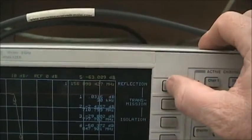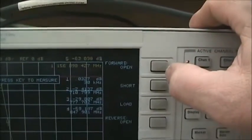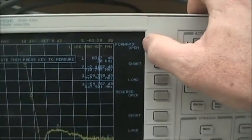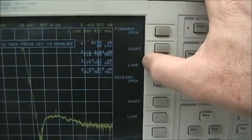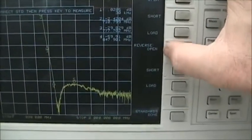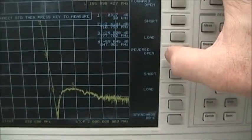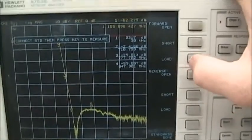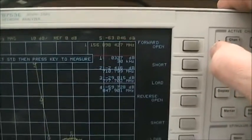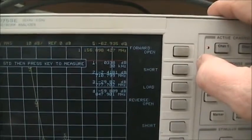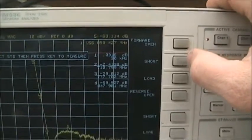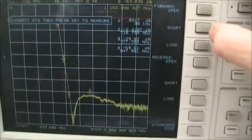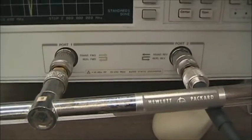I press reflection, and I see that I have open short load SOL for the forward port, port one, and SOL open short load for the reverse port, port two. These are the similar calibration standards we used on the original one-port calibration. Now we need to disconnect the filter and put on the load.